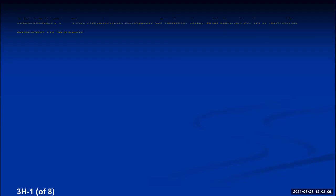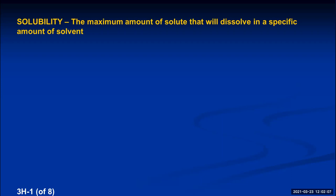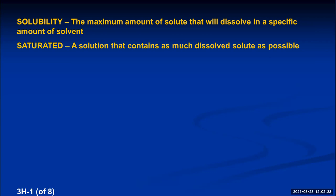This is lecture 3-H, and today we're going to talk about solubility. Solubility is defined as the maximum amount of solute that will dissolve in a specific amount of solvent. When you've completely dissolved as much solute as you can in a particular amount of solvent, you have created what's called a saturated solution — a solution that contains as much dissolved solute as possible.